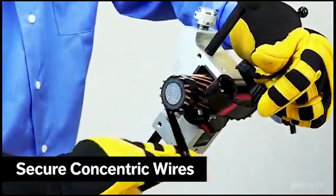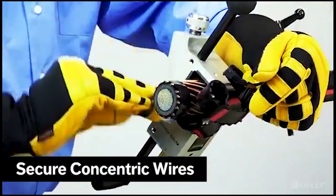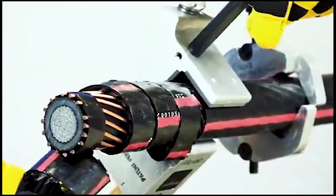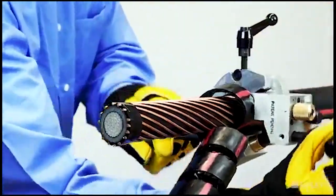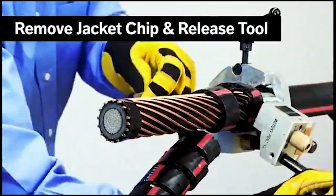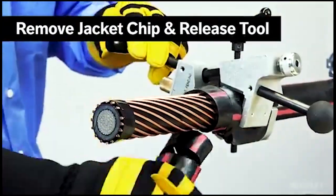Secure the concentric wires with electrical tape to prevent them from separating or catching. Continue to rotate the tool until the Infinity reaches the stop clamp. Remove the jacket chip and release the tool from the cable.